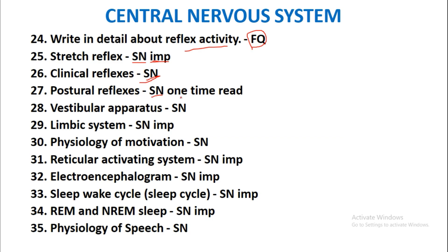Postural reflexes will be asked as a short note — it is not that important but you must read it at least once. Vestibular apparatus will be asked as a short note. Limbic system will be asked as a short note and is one of the important short notes. For theory viva, the functions of the limbic system are most important. Physiology of motivation and physiology of emotions are both one-time read topics and may be asked as a short note.